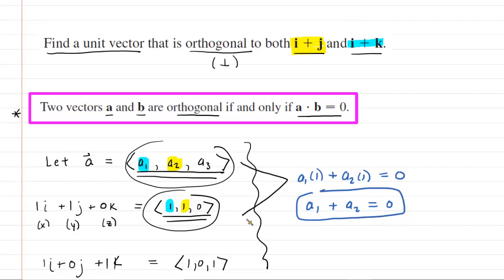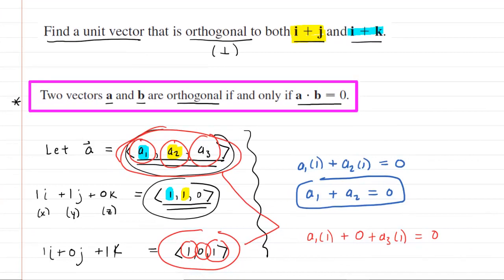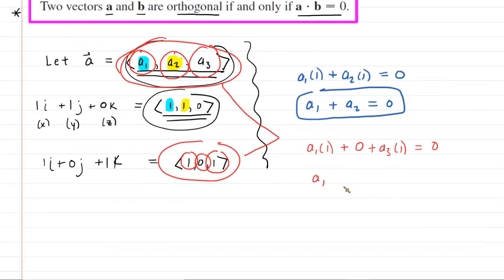Now, we also want our unknown vector to be perpendicular to this vector. So we're going to do the dot product between those two vectors right now. Following the same procedure, we're going to do A1 times 1, multiplying the X components together. And then add that to the result of multiplying the Y components together. Well, of course, A2 times 0 is just going to be 0. And then multiply the Z components together. You're going to have A3 times 1. And then set that equal to 0 so that we can ensure that the vectors are orthogonal or perpendicular to one another. This becomes A1 plus A3 is equal to 0.